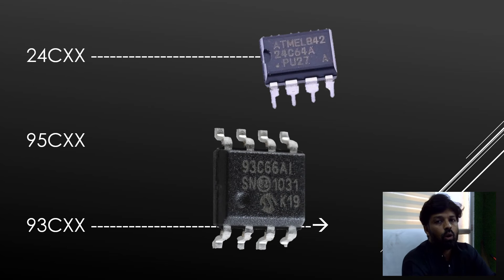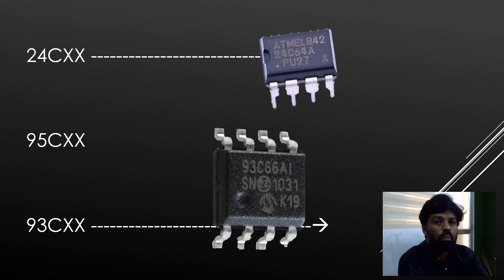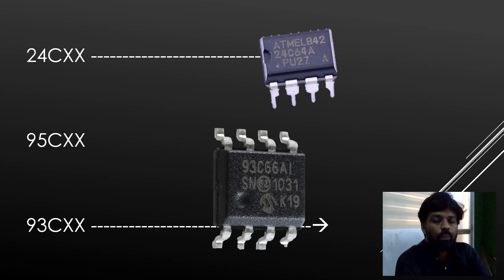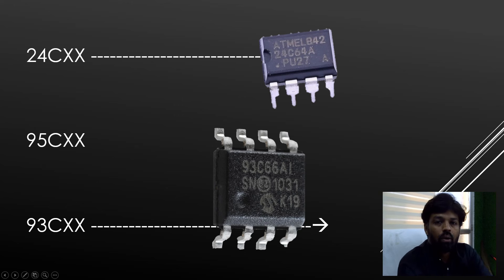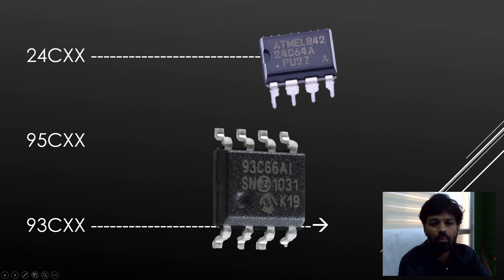In our automotive field, the most common EEPROM ICs start from the 24C series. You will see these in odometers — the IC packages are very small, as shown in the photo. Other series include 95CXX and 93CXX. Both sizes are found in ICs used in our industry.